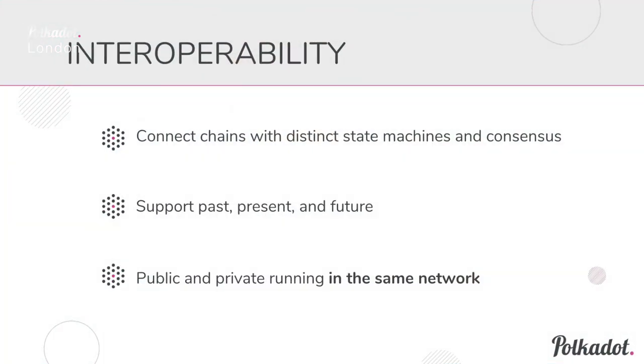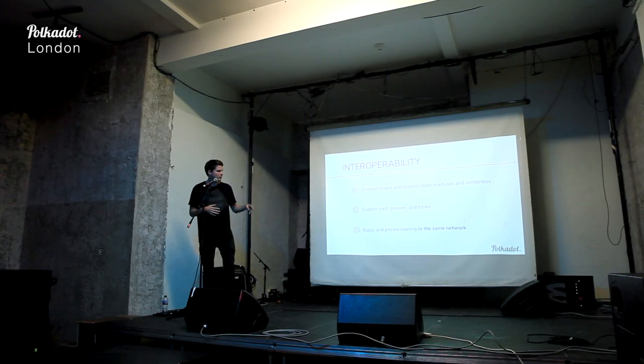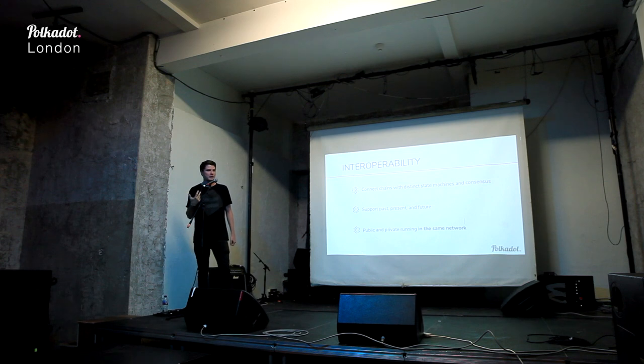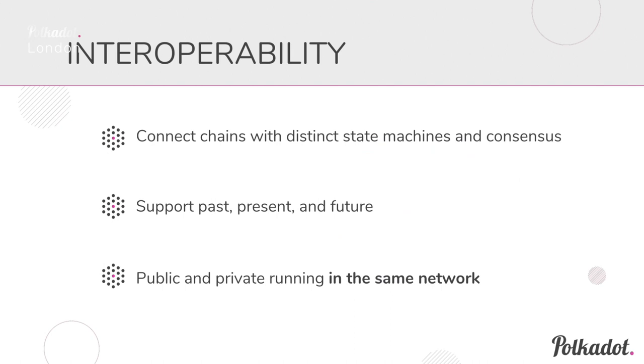Current blockchain technologies can't really talk to each other in the way we'd like. This all falls under the umbrella of interoperability — we want to make sure that separate blockchains can talk to and understand each other. For us, a few things sum this up well. One: we really want to make sure you can connect chains that have different state machines as well as different consensus mechanisms. That should not be a factor in whether you can connect chains or not.